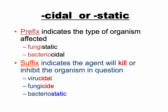Microbial growth control methods can kill microorganisms — cidal — or just inhibit their growth — static. The prefix of a word indicates the type of organism affected: fungistatic is effective against fungi, bactericidal is effective against bacteria. The suffix indicates whether it kills or just inhibits: viricidal kills viruses, a fungicide kills fungi, and bacteriostatic is effective against bacteria but only inhibits or slows their growth rather than killing them.